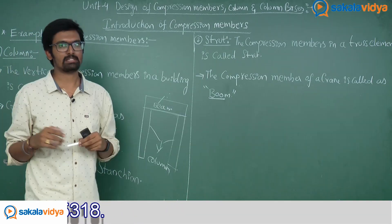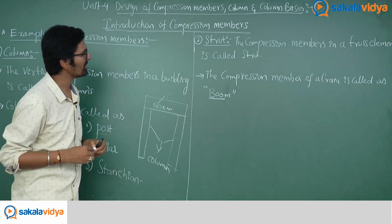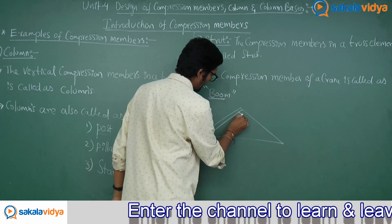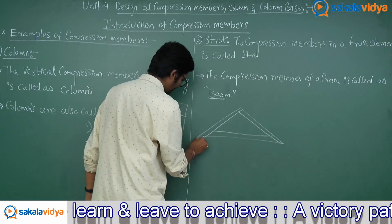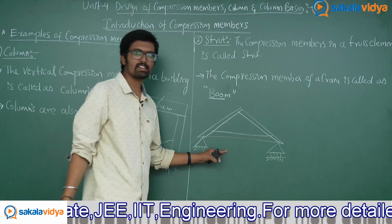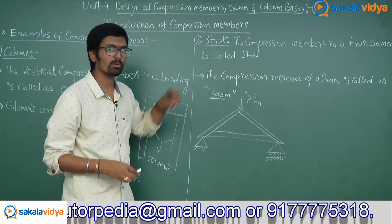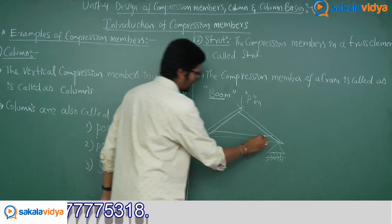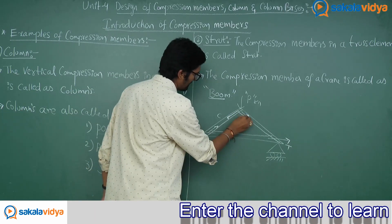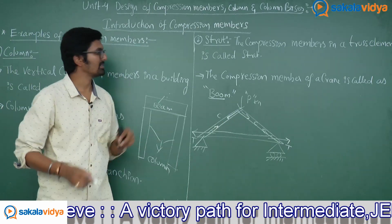The second example of compression members is a strut, also called angle strut. The compression members in a truss element are called struts. For example, in a truss element when a load is applied, some members experience an increase in area — those are tension members — while others experience a decrease in area — those are compression members. In a truss element we can have two compression members and one tension member. This is an example for your strut.